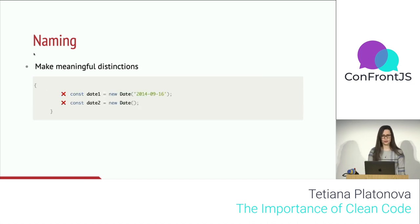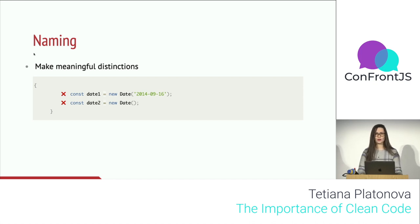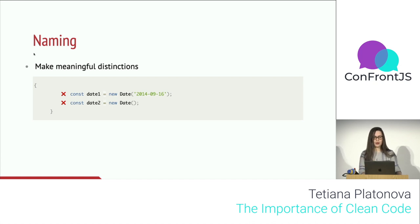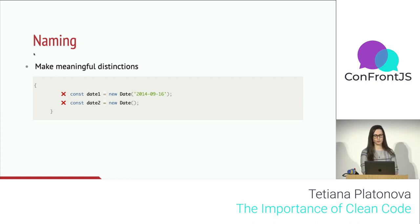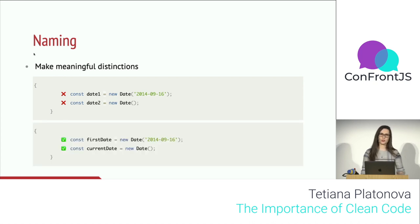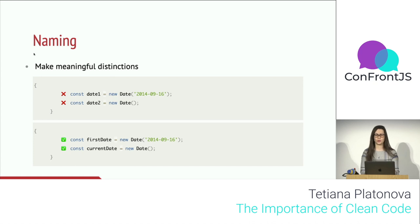Another rule is to make meaningful distinctions. It's considered a bad approach to use numbers in naming entities. For example, 'date1' and 'date2' give no information. But when you name them 'firstDate' — the first date of some event — and 'currentDate' — today's date — the name itself gives you the information about what the variable holds.